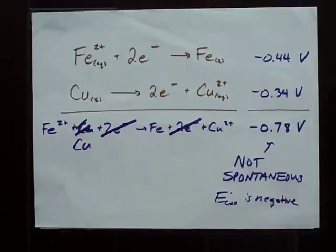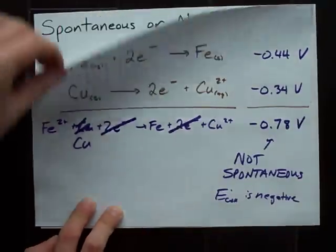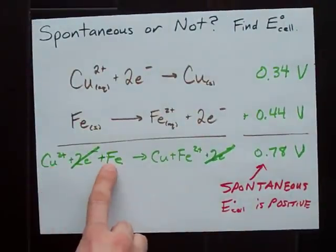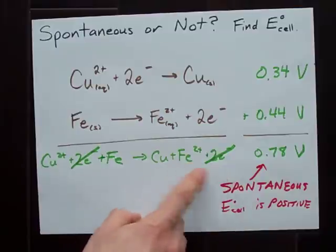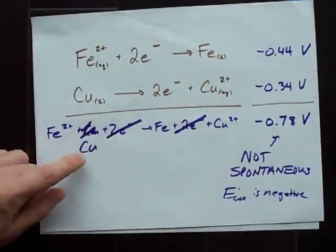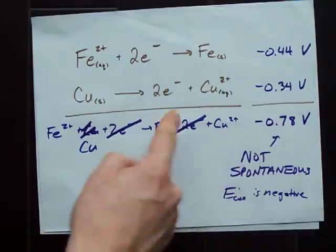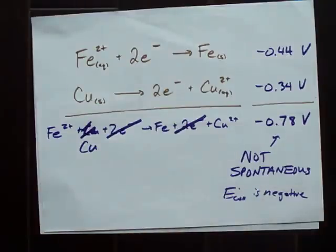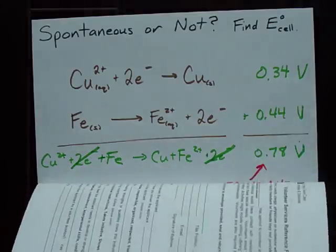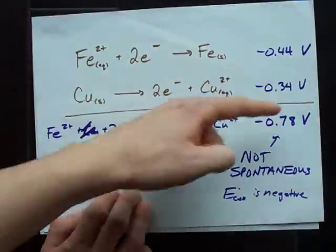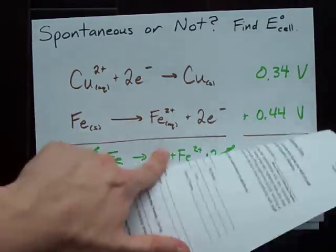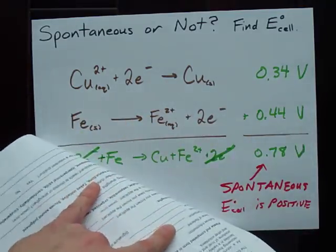But what you'll notice is that copper 2+ mixed with solid iron is a spontaneous reaction, but copper mixed with iron 2+ is not a spontaneous reaction. You'll have to take an educated guess about which is going to happen, figure out your E cell and make sure that it's positive if you want to predict which direction your reaction goes in.